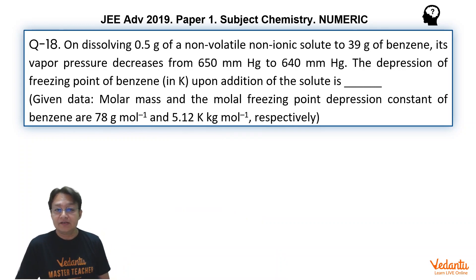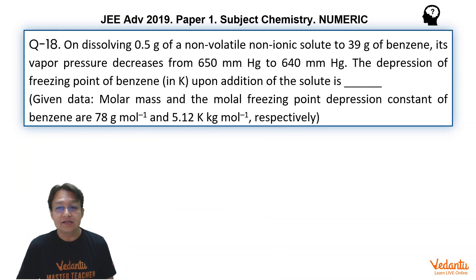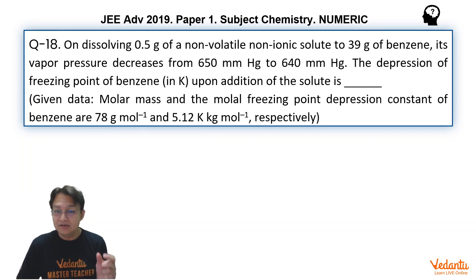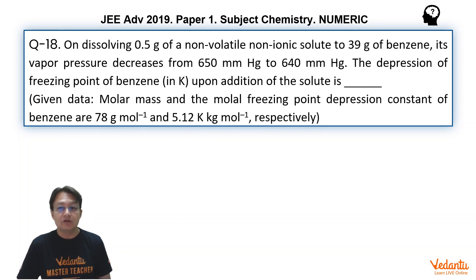The problem is: on dissolving 0.5 gram of a non-volatile, non-ionic solute in 39 grams of benzene, its vapour pressure decreases from 650 mm of Hg to 640 mm of Hg. This initial information tells us that this is lowering in vapour pressure when a non-volatile solute is added to a volatile solvent.